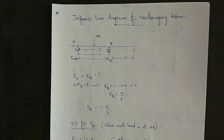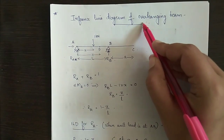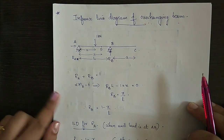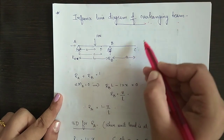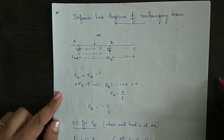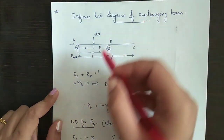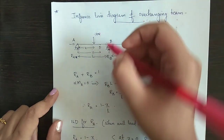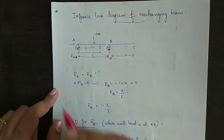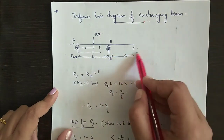Today we are going to deal with influence line diagrams for an overhanging beam. Consider an overhanging beam ABC with overhang along BC. A unit load is placed at a distance X, and a section is considered at a distance Z from support A. The span of AB is L and the span of BC is A.